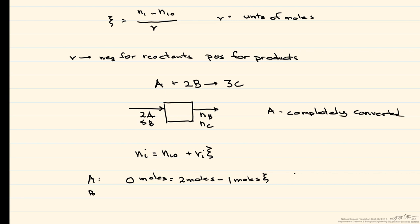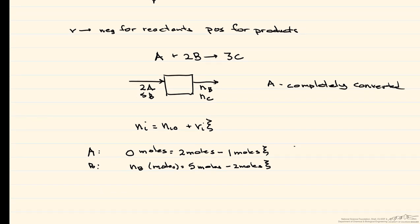We do the same for B. What comes out, in moles, is equal to what came in, which is 5 moles minus 2 moles, the stoichiometric coefficient, times our squiggle. And again, it's negative because it is a reactant.